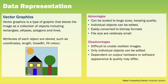Vector graphics store the image as a collection of objects including rectangles, ellipses, polygons and lines, along with attributes about these objects such as coordinates, length, breadth and fill colour. Because we are storing details about the objects, it allows the picture to be increased in size while keeping quality, and we can edit the image at object level. File sizes are relatively small. However, it is very difficult to create realistic images, and how a vector graphic looks depends on the hardware and software used to render it.